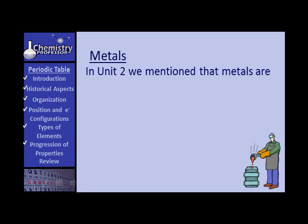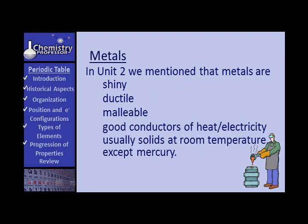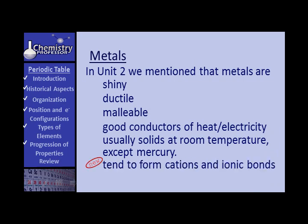Metals. Remember metals. In Unit 2, we talked about metals being shiny and ductile and malleable. That they were good conductors of heat and electricity. And as a rule, they were solids at room temperature. Except, of course, the common one that you know of is mercury. Well, there are a couple of other things that we need to add to our list of properties. We need to mention that metals tend to form cations and tend to have ionic bonding when reacting with elements of non-metal character. They tend to form basic oxides.